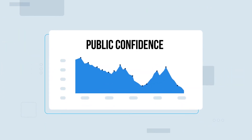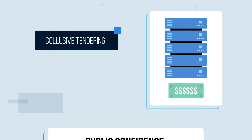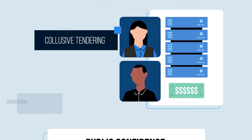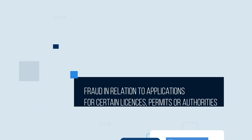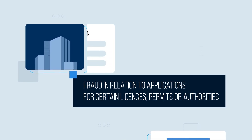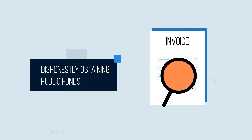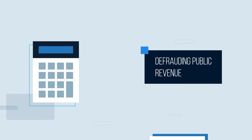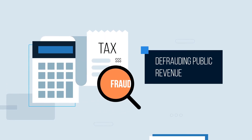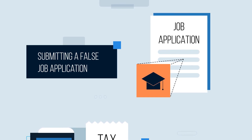Some conduct that impairs public confidence in government can also be corrupt. This includes collusive tendering — for example, two suppliers conspiring to increase prices and rip off a public sector agency. Fraud in relation to applications for certain licences, permits or authorities, such as a property developer submitting false information as part of a development application. Dishonestly obtaining public funds — for example, a supplier submitting a false invoice. Defrauding public revenue, such as a business deliberately underpaying its payroll tax. Submitting a false job application — for example, a candidate for a public sector job pretending to have a doctorate from a prestigious university.